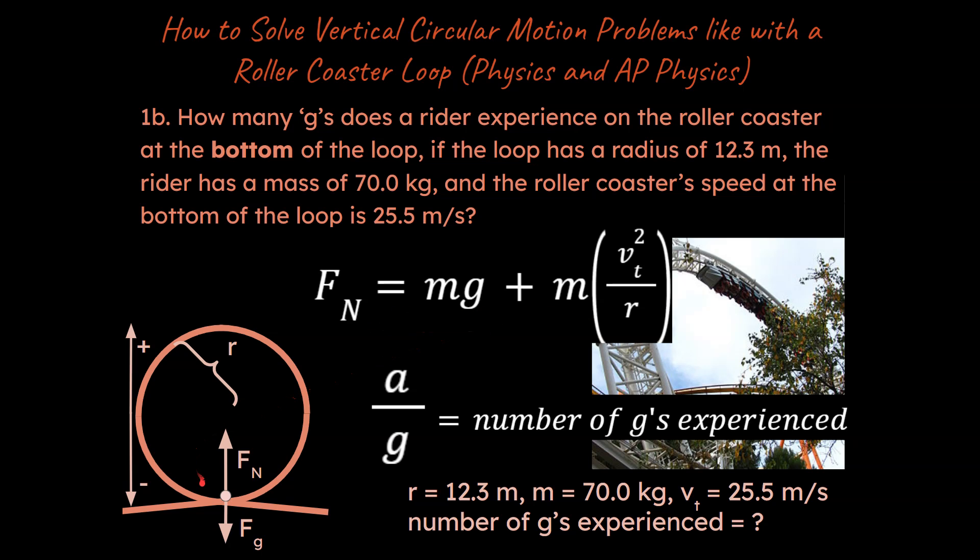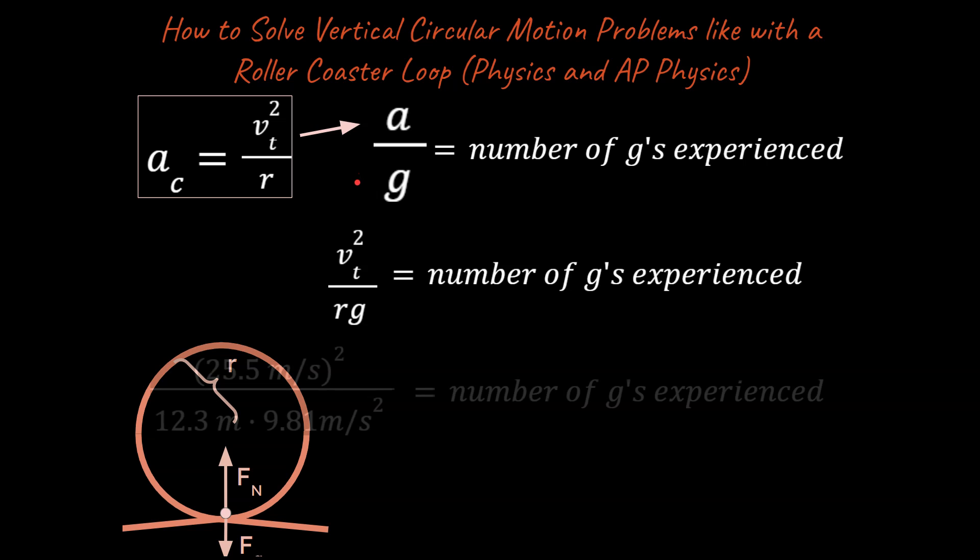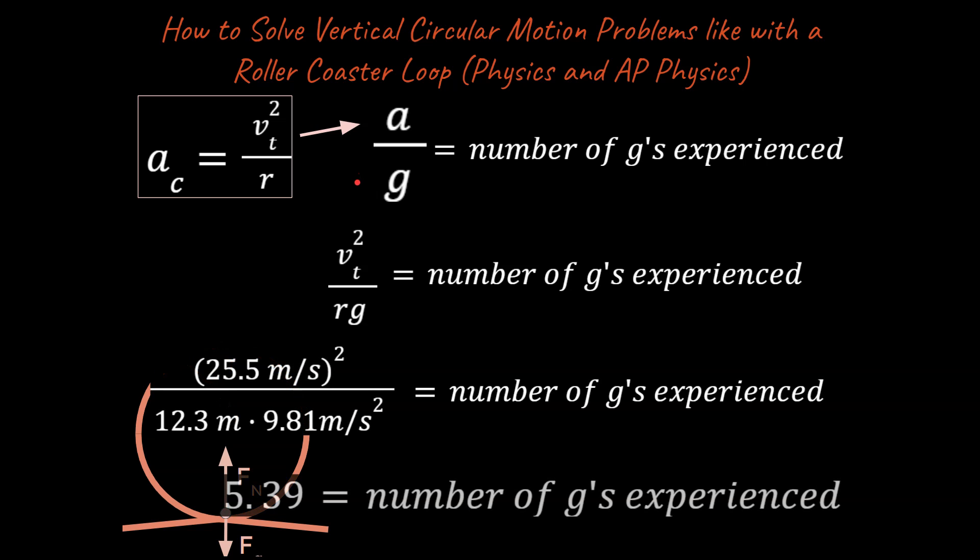So we can take that work we did at the bottom of the roller coaster here, and knowing that the number of g's experienced is going to be the acceleration that's experienced divided by our acceleration due to gravity. Therefore, we can go ahead and plug in some numbers here and think about what we end up with. The number of g's that this person would experience would be 5.39 g's at the bottom of a roller coaster.